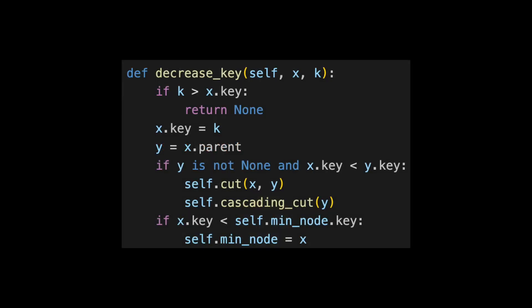Let's start with the code, then we'll take a look at a few examples. The decrease key function takes two parameters: X, which is a pointer to the node whose key we want to decrease, and K, which is the new key value.